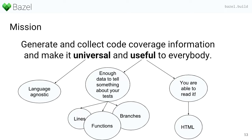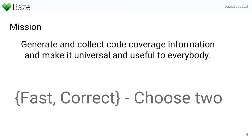But at the same time, it has to be useful — you have to have enough information to tell you something meaningful about your source code and your tests. So you have to have all of the types of coverage I talked about before: for lines, functions, and branches. You should also be able to read it in a human-readable format, so there has to be a way to generate HTML reports from it. And of course, we want to keep the Bazel standards, so it has to be fast and correct as well.